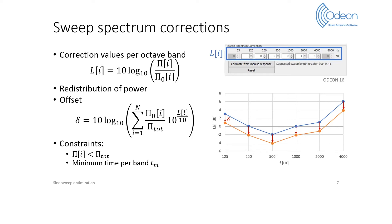In addition, we impose a minimum time spent per octave band by the sweep, which also leads to constraints in terms of power. The corrections may be truncated to fulfill these constraints.